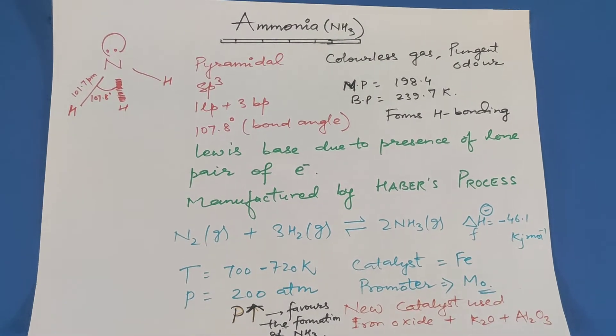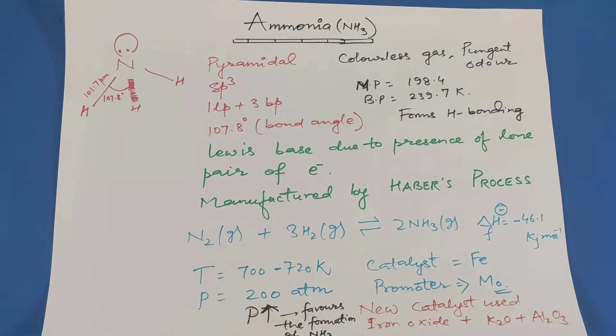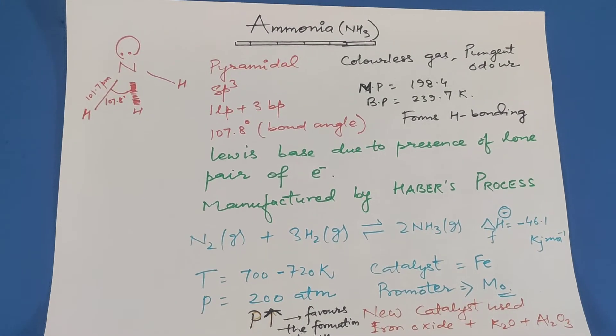Now we are going to discuss ammonia. The formula of ammonia is NH3. It has a trigonal pyramidal structure.